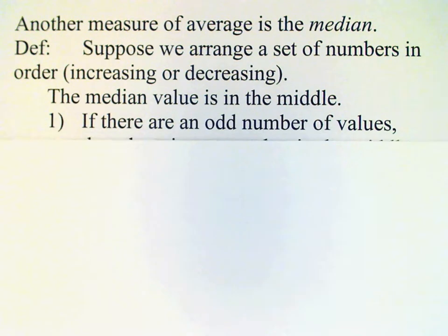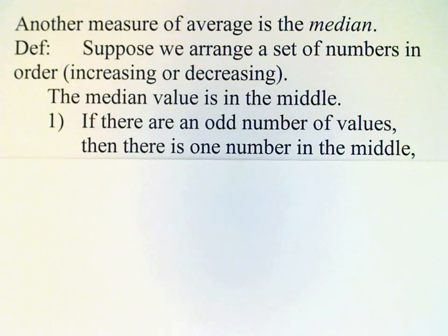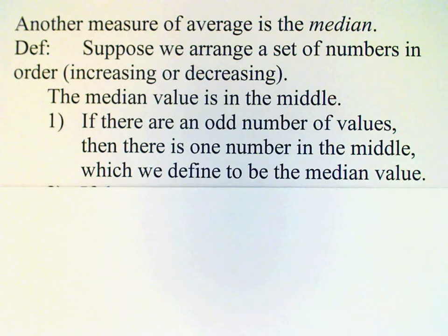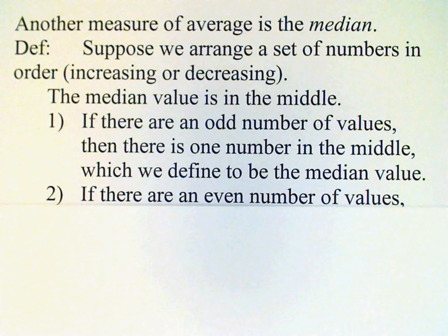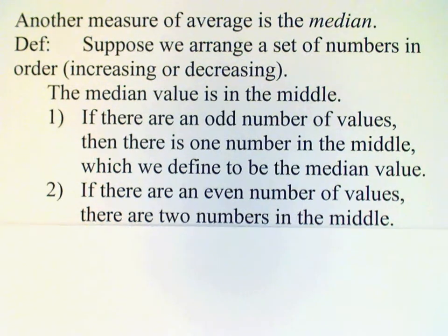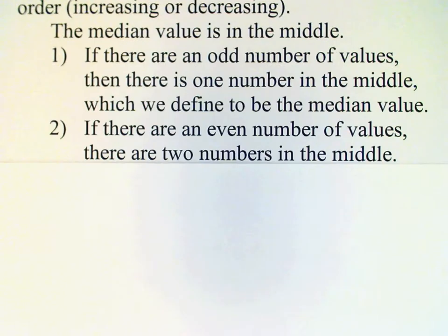Now there are two possibilities. If we have an odd number of values, then there will be only one number in the middle, and that will be defined as the median value. If there are an even number of values, then we have two numbers in the middle, and to get the median we need to take the mean of those two values.